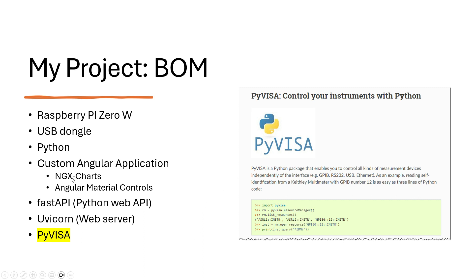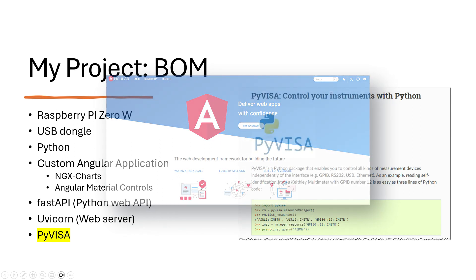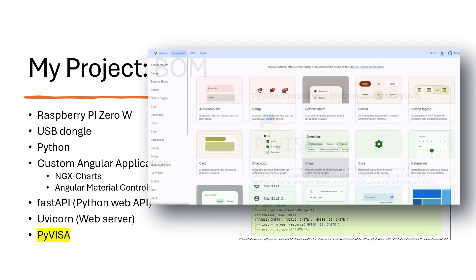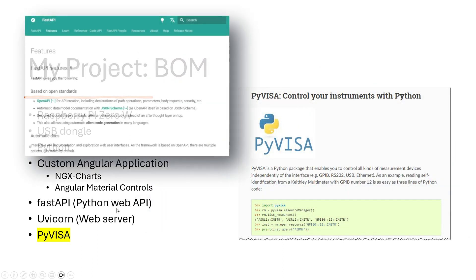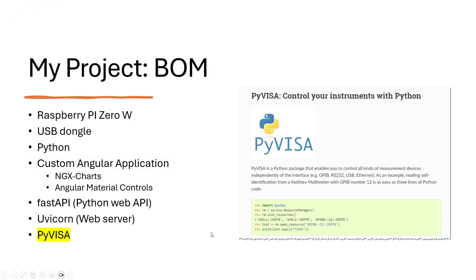Some of the other things I used: I put together a custom Angular application to provide the frontend — we just saw that. That talks through web services to a custom Python program that's providing web services. For that, I'm using some standard APIs — FastAPI and Uvicorn as a web server.